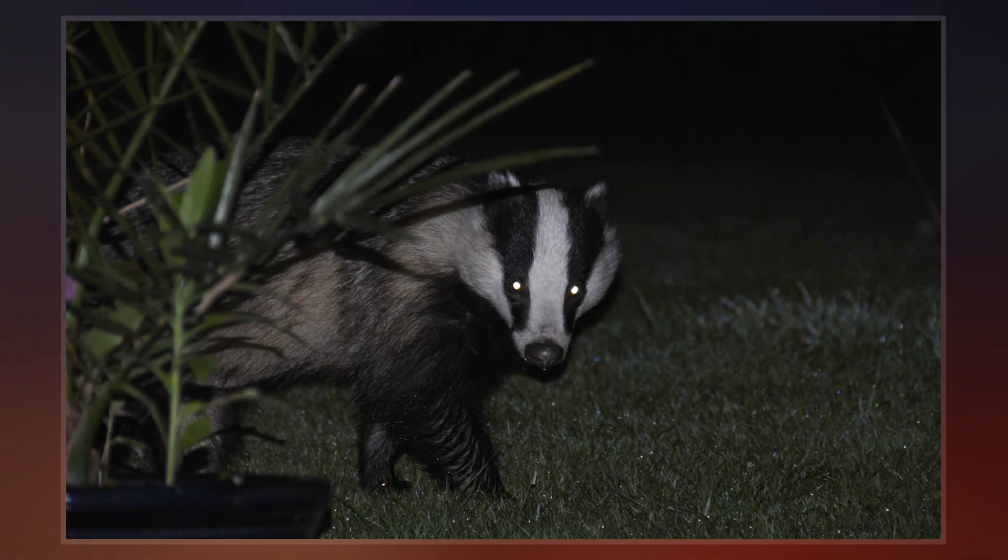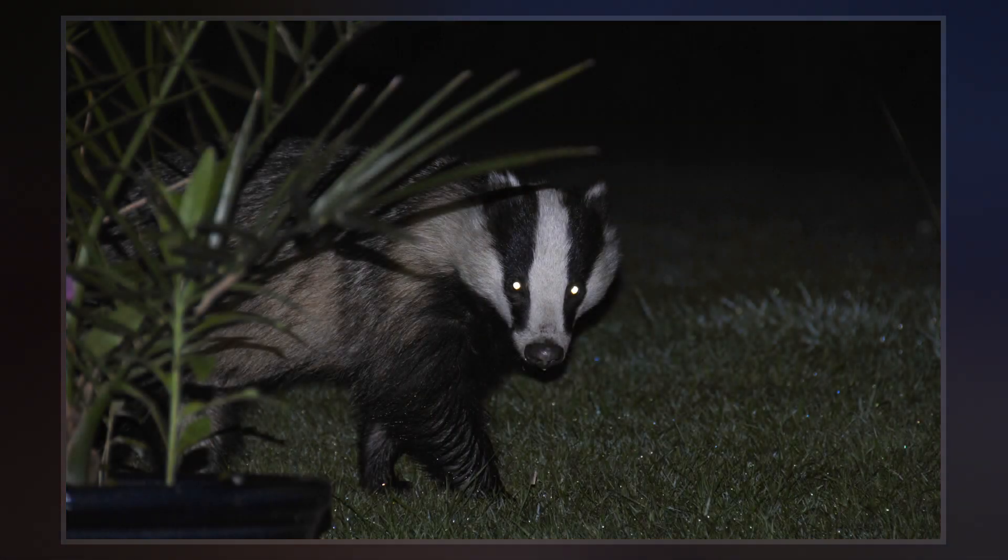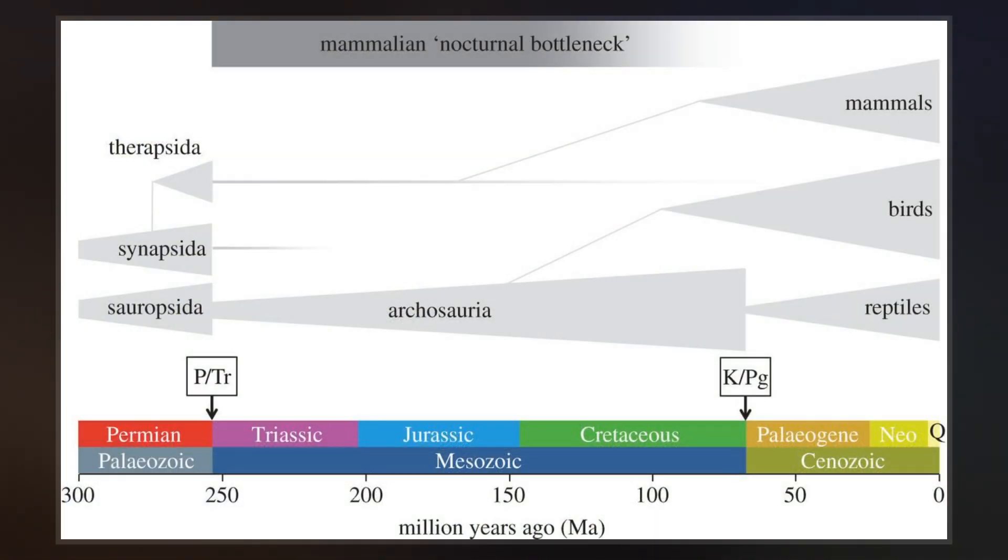In 1942, Gordon Lynn Walls described this concept which states that placental mammals were mainly or even exclusively nocturnal through most of their evolutionary story.